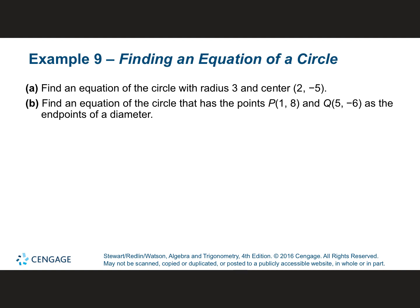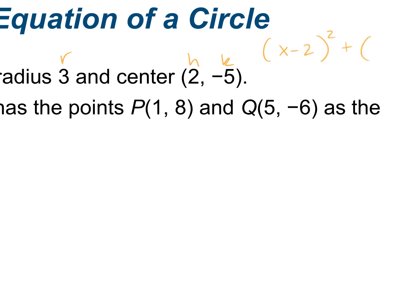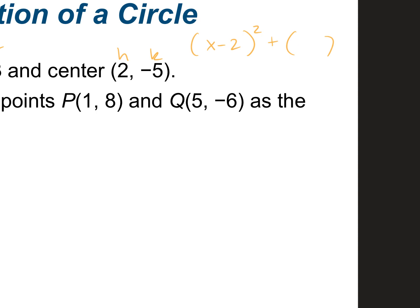For part a, find the equation of a circle with radius 3 and center (2, -5). Our h is 2 and k is -5 and r is 3. Plugging into the formula: (x minus 2) squared plus (y plus 5) squared — always flip the sign for k — equals 3 squared, which is 9.